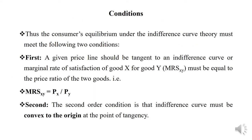What are the conditions for consumer equilibrium? Consumer equilibrium under the indifference curve theory must meet two conditions. First, a given price line should be tangent to an indifference curve, or the marginal rate of substitution of good X for good Y must be equal to the price ratio of two goods — that is, MRS(x,y) equals the ratio of price of X to price of Y. Second, the indifference curve must be convex to the origin at the point of tangency.